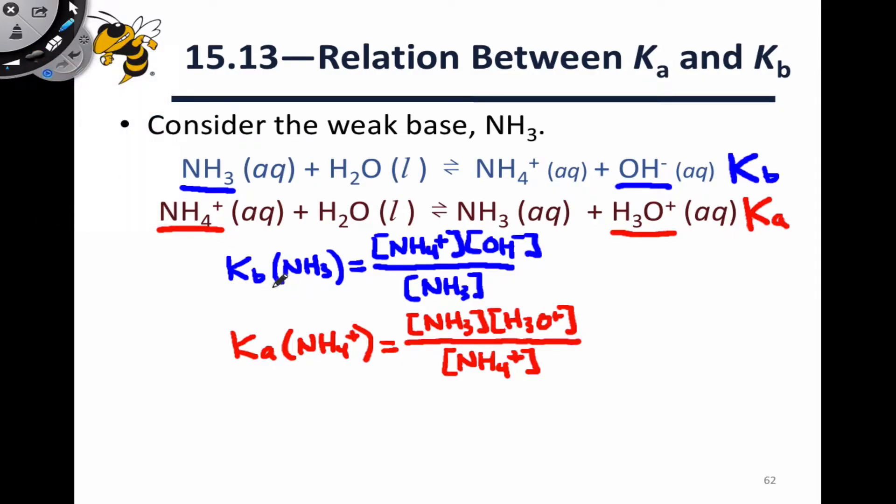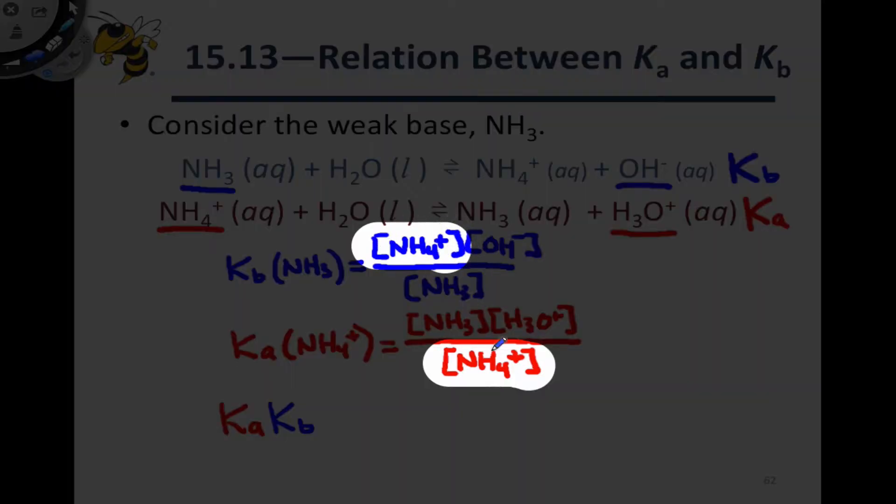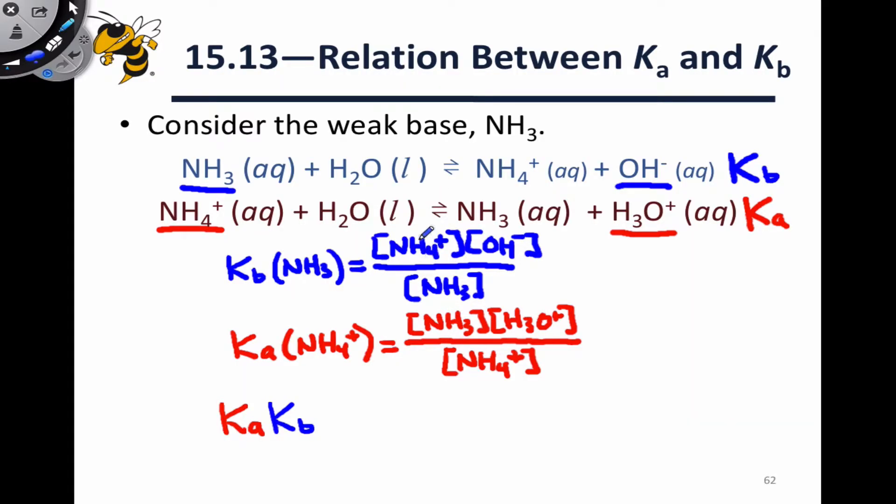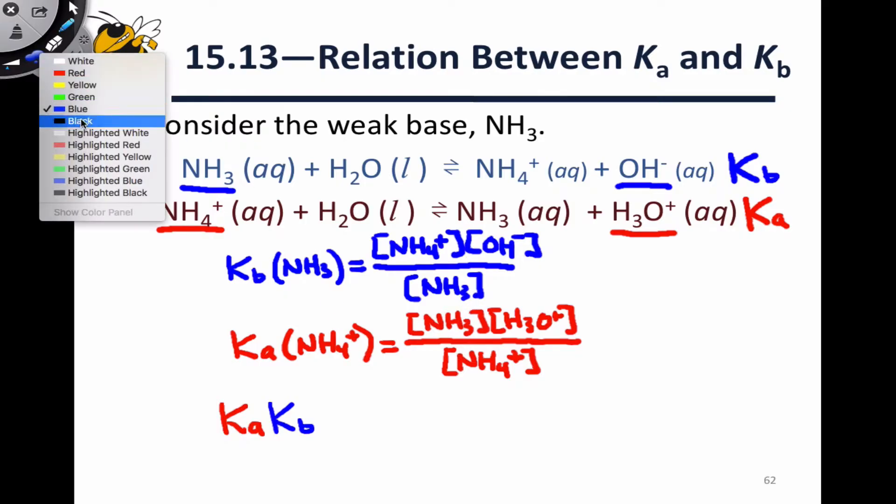Notice something interesting here. In the Kb expression in blue, we have the NH4+ concentration in the numerator and the NH3 concentration in the denominator. But in the Ka expression for the conjugate acid, we have NH3 in the numerator and NH4+ in the denominator. That means that when we multiply the two, when we multiply Ka for NH4+ times Kb for the conjugate base NH3, those two sets of terms are going to divide out. All that's to say is that the terms that are associated with the acid and the conjugate base are going to disappear when we multiply these two things together.